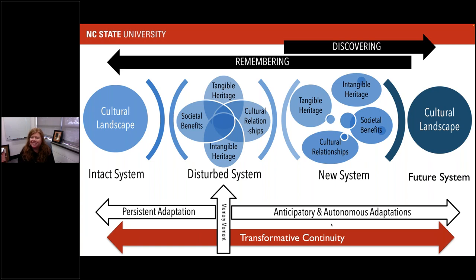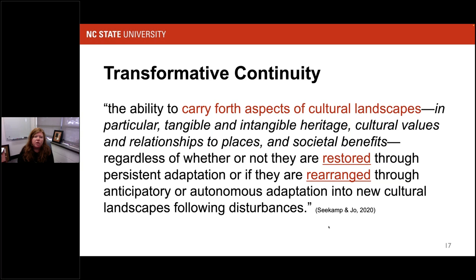There's also a memory moment when a system becomes disturbed — at that point, we might keep something in its ruined state to educate and discuss the fragility of different ecosystems at different points in time. Moving forward into future systems, this is our ability to discover what we hadn't even conceptualized before. As things become submerged, maybe we leave them in that submerged state so they could be discovered by future generations. The idea I've put forward with a colleague is transformative continuity — the ability to carry forth aspects of cultural landscapes or seascapes, regardless of whether they are restored through persistent adaptation or rearranged through anticipatory or autonomous adaptation into a new cultural landscape following disturbances.